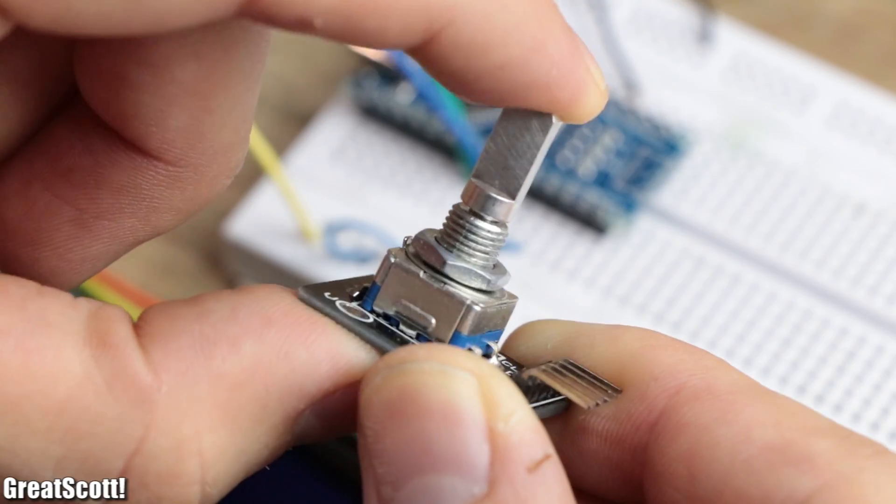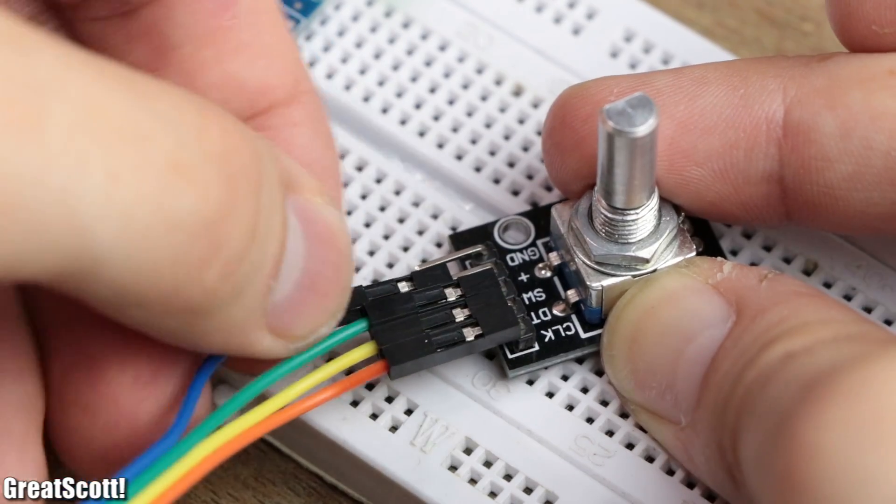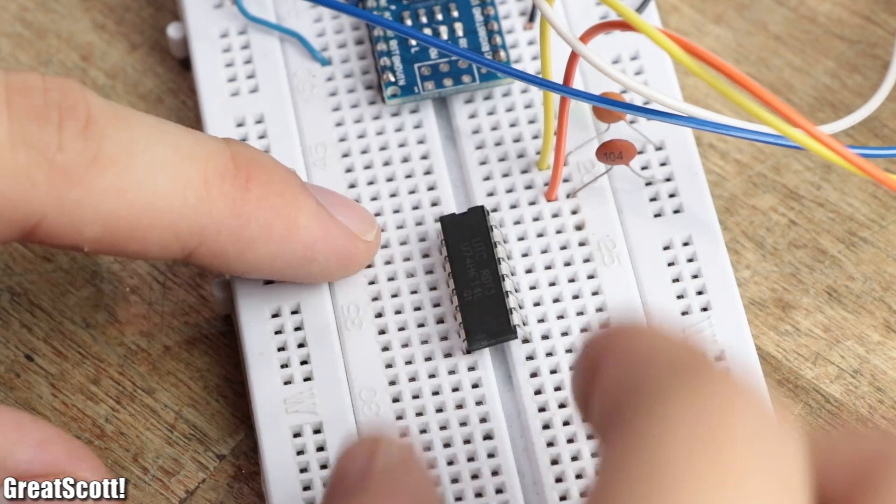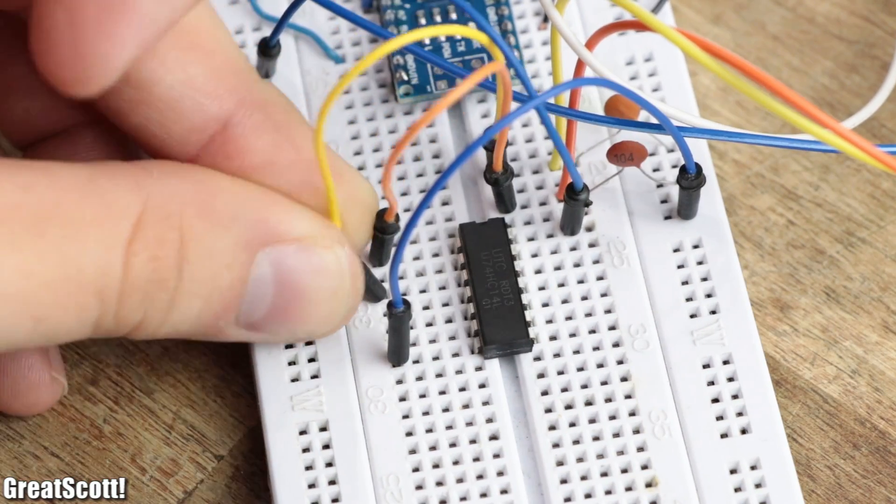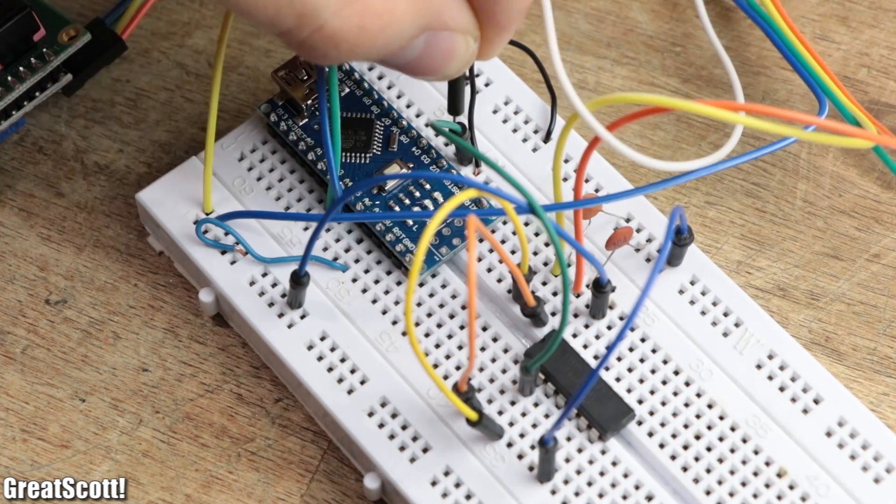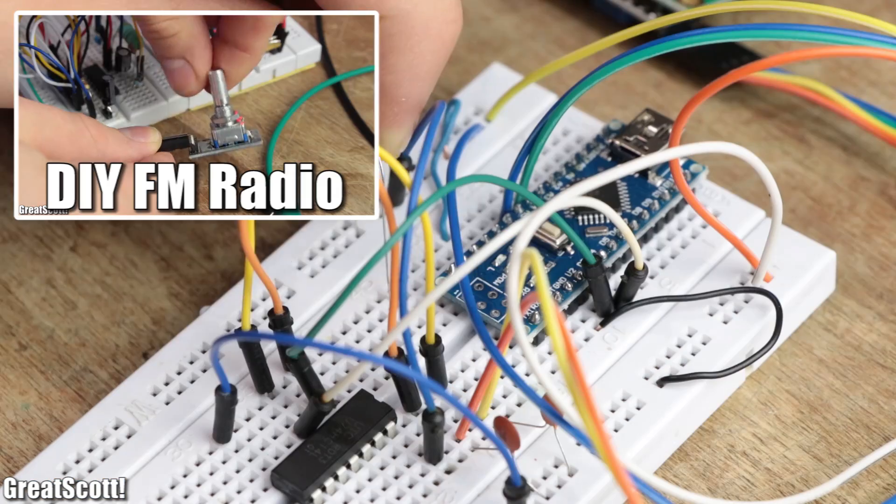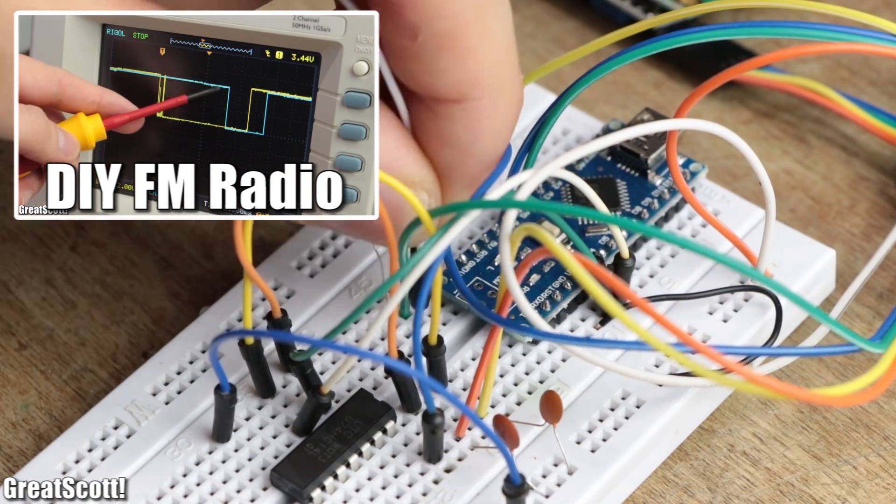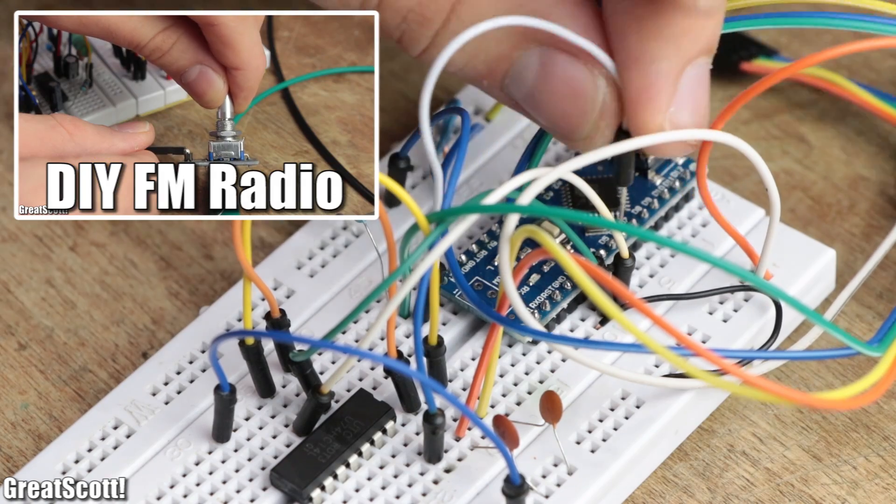But speaking of control, I used a rotary encoder with integrated push button as the main input, in combination with two capacitors and a Schmitt trigger IC for debouncing. I connected its pins to the interrupt pins 2 and 3 of the Arduino. And if you're completely confused now and wonder how a rotary encoder works, then have a look at my DIY FM radio project. I explained it there.